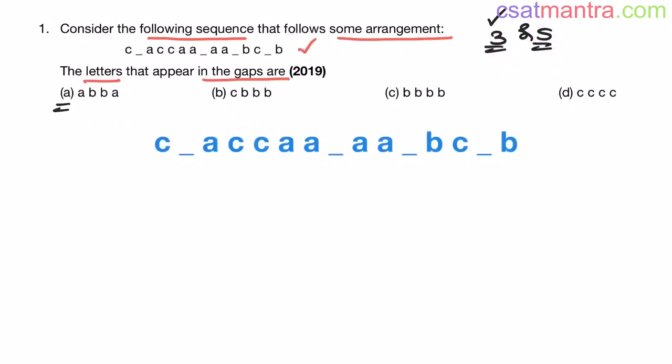Now I am checking with option A: A, B, B, A. Now we will go with set of 3 letters. Set of 3 letters: CAA, CCA, ABA, ABB, CAB. There is no such sequence arrangement. So let's eliminate this one. See, if there is some arrangement it would be clearly visible. That's what I am saying. Don't think too much. It would be clearly visible.